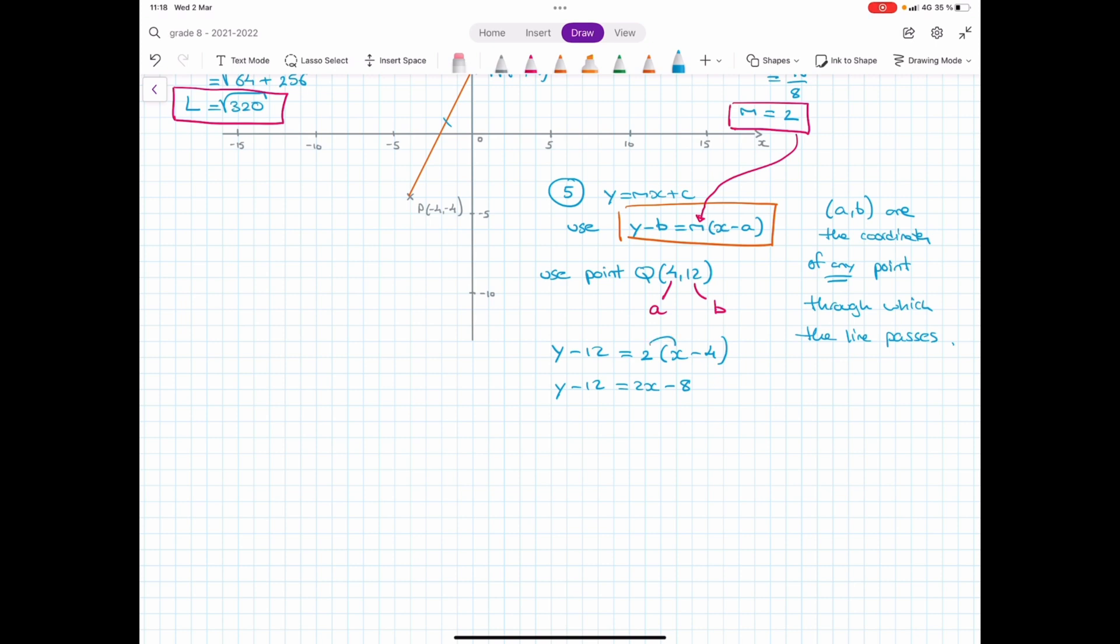I now add 12 to both sides to make Y the subject, which leads to Y equals to 2X minus 8 plus 12. That's 2X plus 4. That's the line's equation.